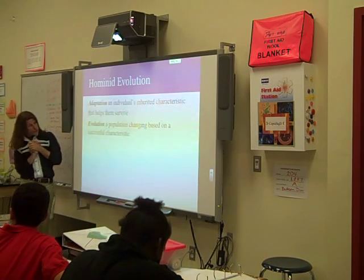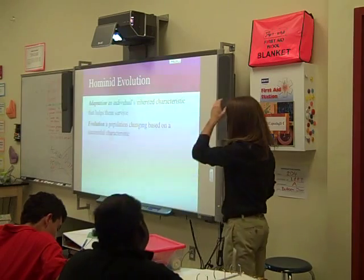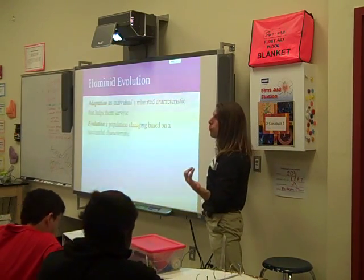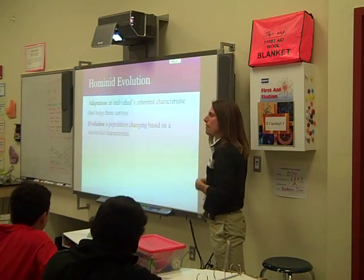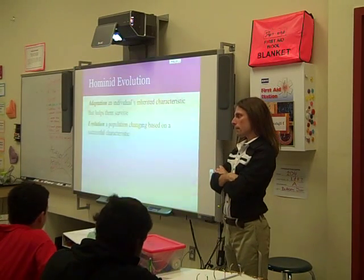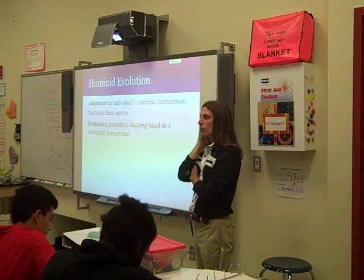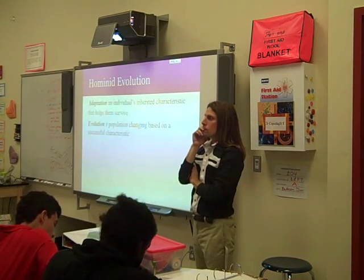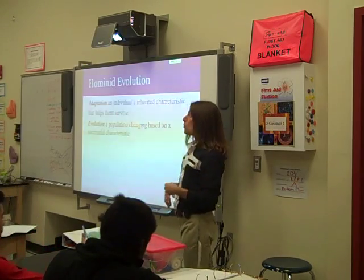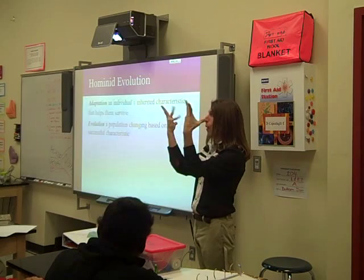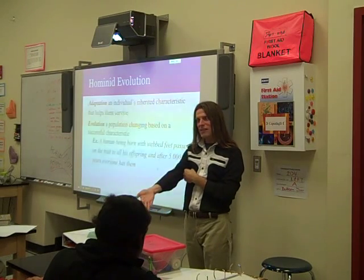Evolution is when enough organisms in a population have a certain trait — it's not just an individual. Has anybody seen the movie Waterworld? It's a sci-fi film where the main character was born with an adaptation unlike everybody else — he was a human with webbed feet and gill slits. In this scenario, if global warming melted all the ice and covered the land with water, that person would survive better than you or I would.